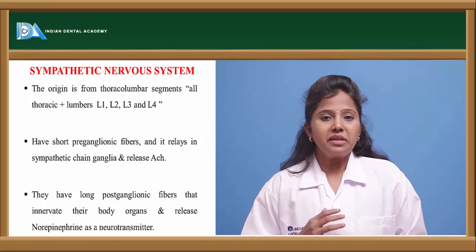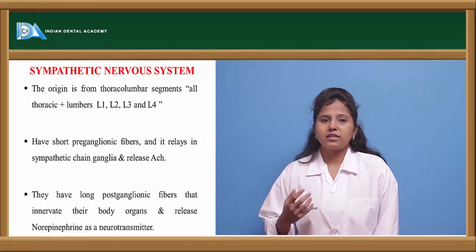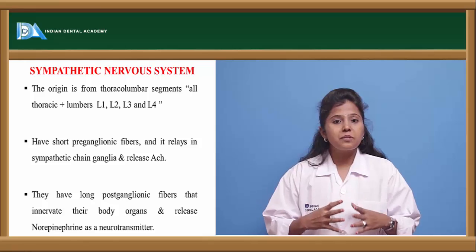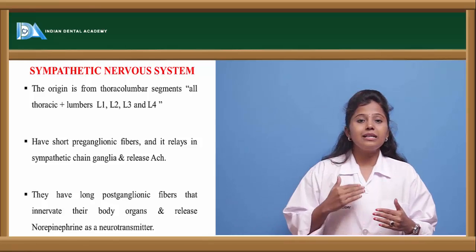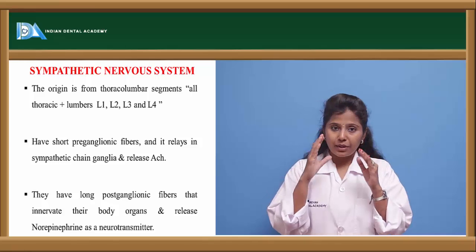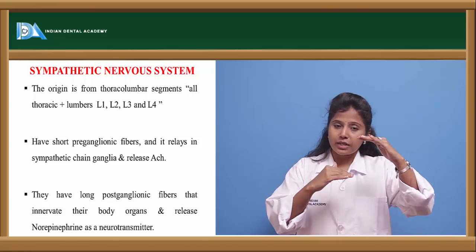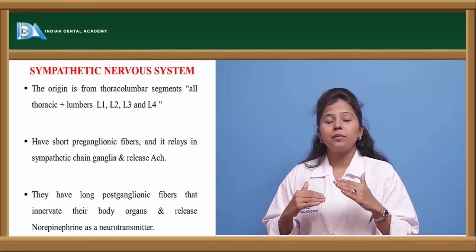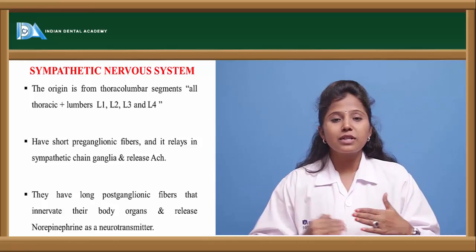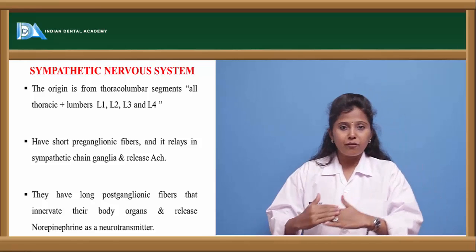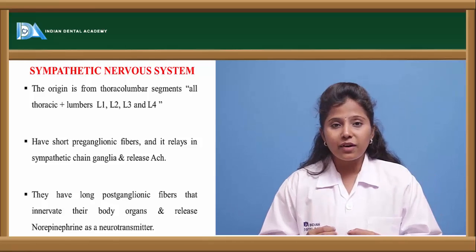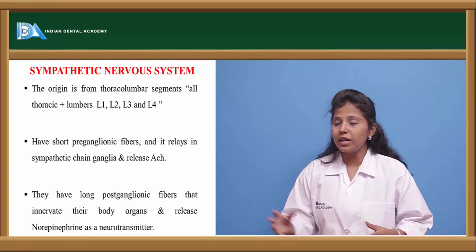The sympathetic nervous system originates in the thoracolumbar region — in the segments of the thoracic region as well as the lumbar region of the spinal cord. It involves all segments of the thoracic region, but in the lumbar region only L1 to L4 segments are involved. It has short fibers with pre-ganglionic as well as post-ganglionic fibers.